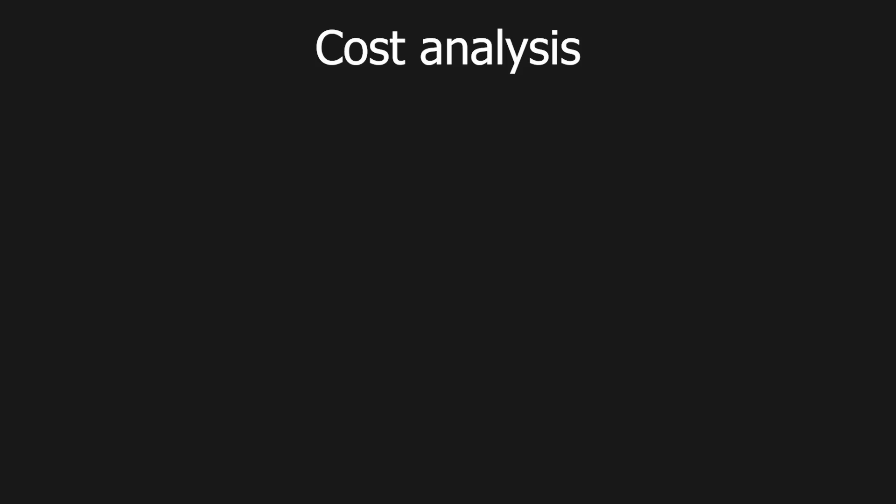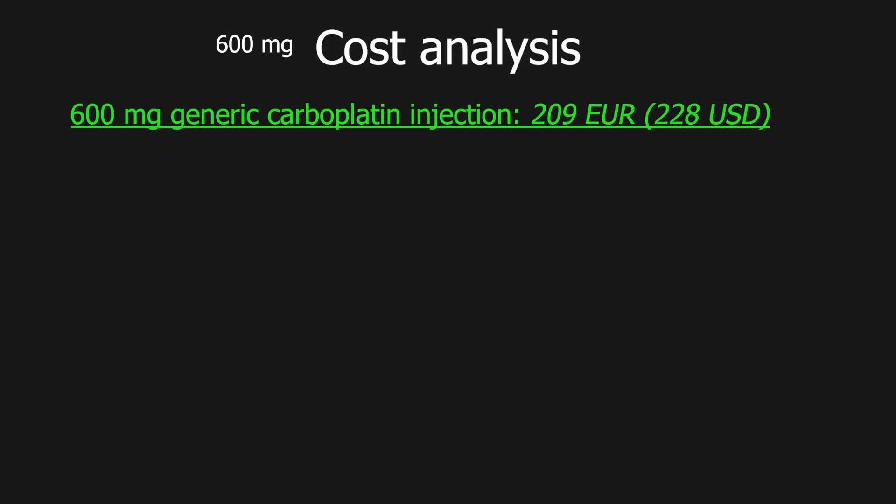Now let's assume my purity is perfect medical grade and compare the price I paid to the price of the medicine. So I have 600 milligrams of carboplatin. And the price of this drug in my country, in its generic form, is 209 euros for a total of 600 milligrams of injectable carboplatin.